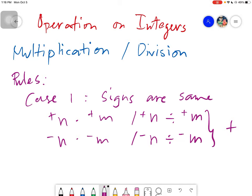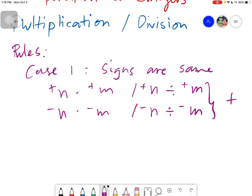So ibig sabihin, kahit anong gawin mong multiplication or division doon sa dalawang number na parehas ng sign, may it be positive parehas or of course negative parehas, ang sagot will always be positive. So no matter what you do, pag may nakita kayong dalawang number na parehas ng sign, automatically you will be positive.